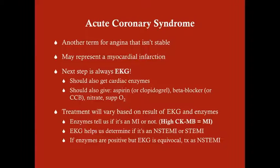Acute coronary syndrome (ACS) is another term covering unstable angina that isn't stable — in other words, conditions that come on acutely, affecting the coronary arteries. ACS encompasses unstable angina, NSTEMI, and STEMI. Unstable angina itself is not a heart attack, but a patient with unstable angina may have a heart attack. So the three components of ACS are: unstable angina (by definition not an MI), NSTEMI, and STEMI — the two different kinds of heart attacks.